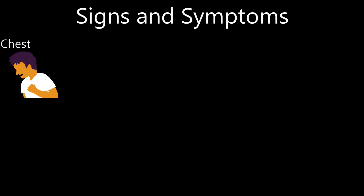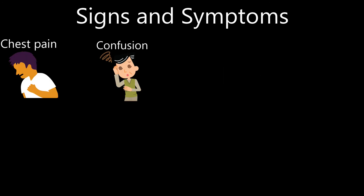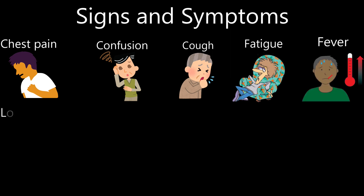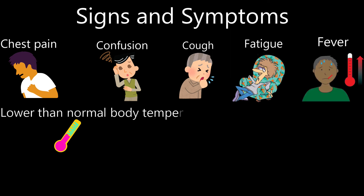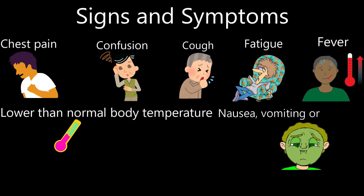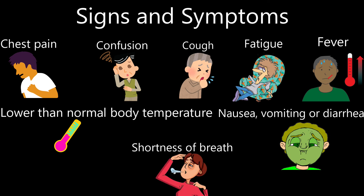Signs and symptoms of pneumonia include chest pain when you breathe or cough, confusion or changes in mental awareness (usually in people over 65), a cough which may produce phlegm, fatigue, fever, sweating, and lower than normal body temperature — the latter usually occurring in adults older than 65 and people with weakened immune systems. Other symptoms include nausea, vomiting or diarrhea, and shortness of breath.